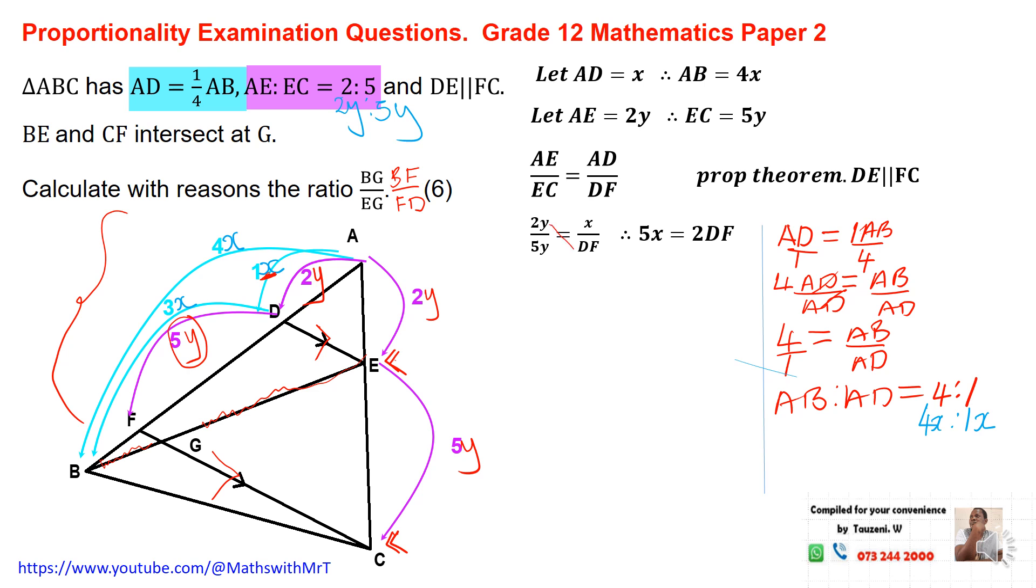Carrying on, I have 2Y over 5Y is equal to X over DF. If I cross multiply these two, I'm going to have this Y and this Y are out. So 5 times X will give me 5X. Then 2Y times DF is equal to 2 times DF. I cancel out this Y and this Y. Then I cross multiply. After the cross multiplication, I divide this side by 2 and I divide this side by 2. That will give me the value of DF. So DF is equal to 5 over 2X. That is the line from D to F. This is equal to 5 over 2X.